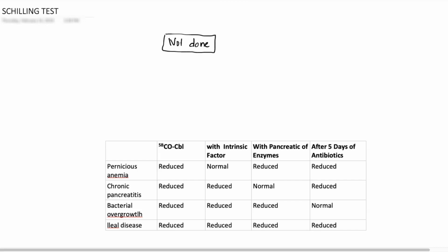But if you do a Schilling test, it helps you in differentiating these four major diseases which cause vitamin B12 deficiency. One is pernicious anemia, second is chronic pancreatitis, third is bacterial overgrowth, and fourth is ileal disease. There is one more variety called achlorhydria. At the end of the discussion, I'll also tell you what modification you need to do to identify achlorhydria. Let us begin now then.